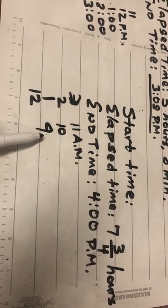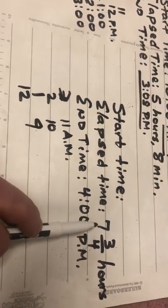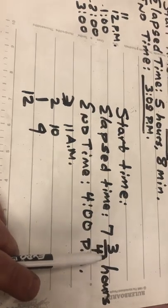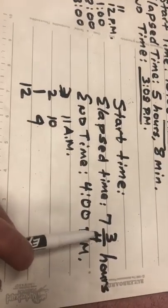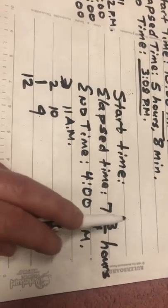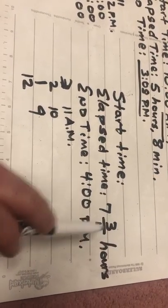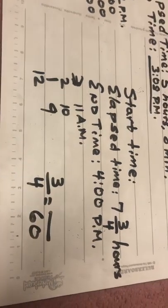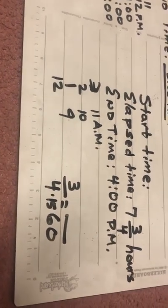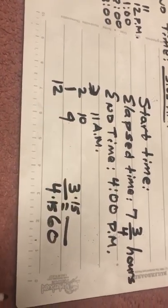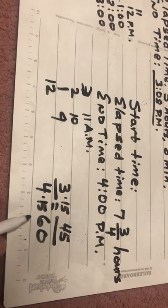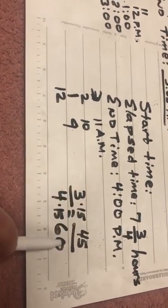But the answer is not 9 o'clock a.m. because the elapsed time was seven and three-fourths hours. I need to figure out what three-fourths of an hour is in minutes. Since there are 60 minutes in an hour, three-fourths equals how many over 60. Since 4 times 15 equals 60, I do 3 times 15, which is 45. So three-fourths of an hour is 45 minutes.